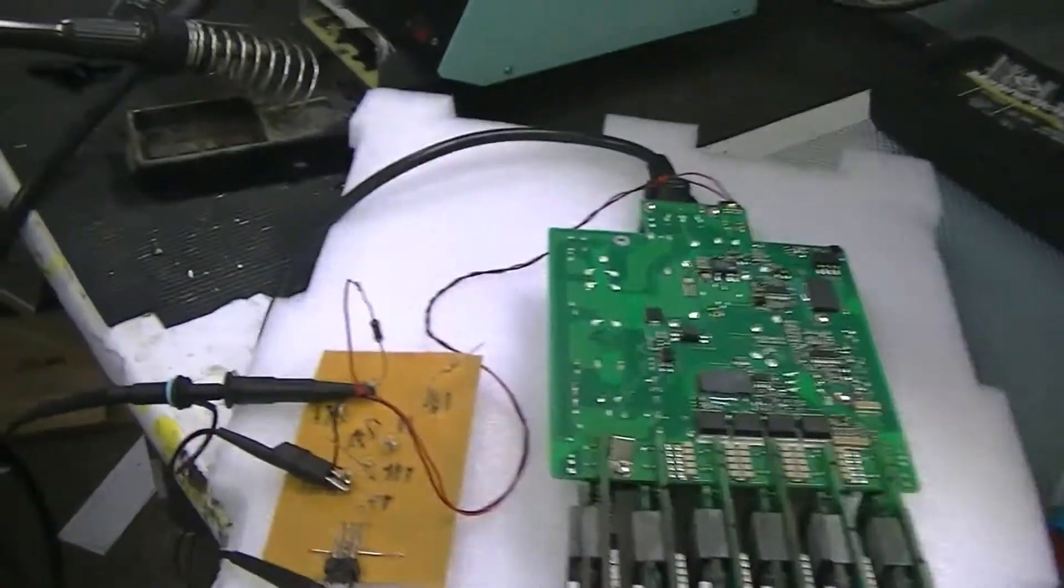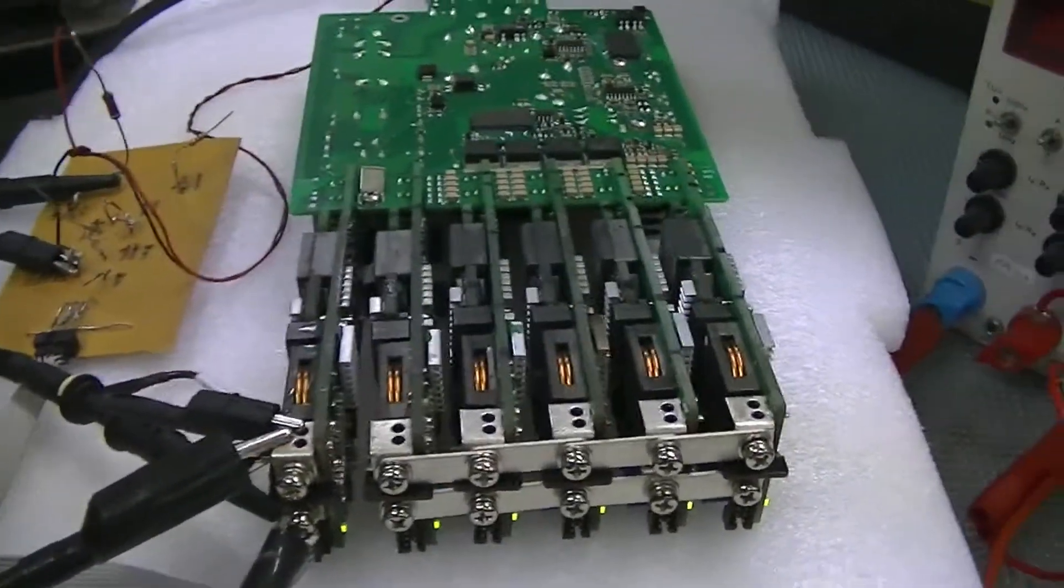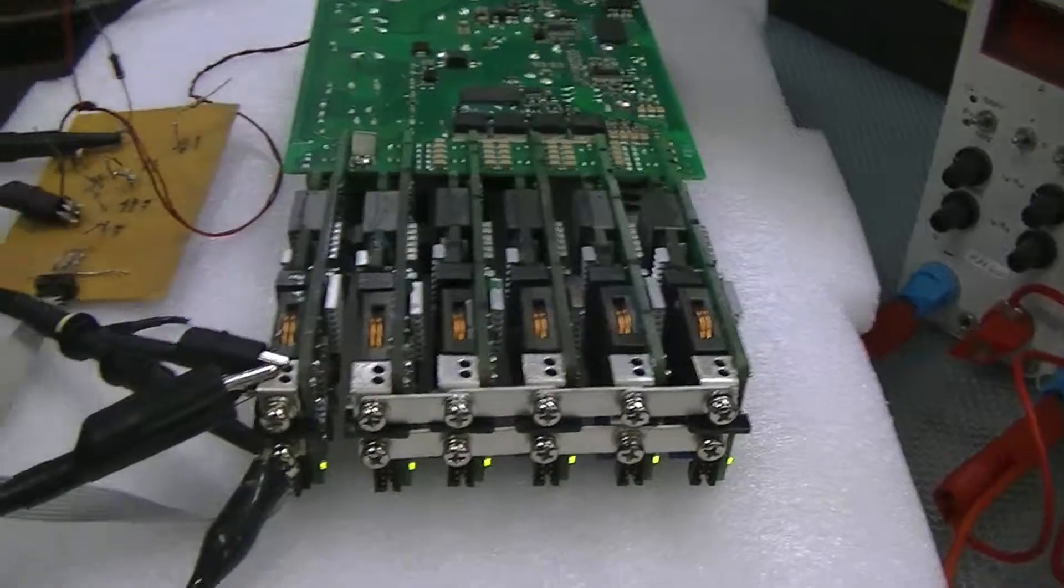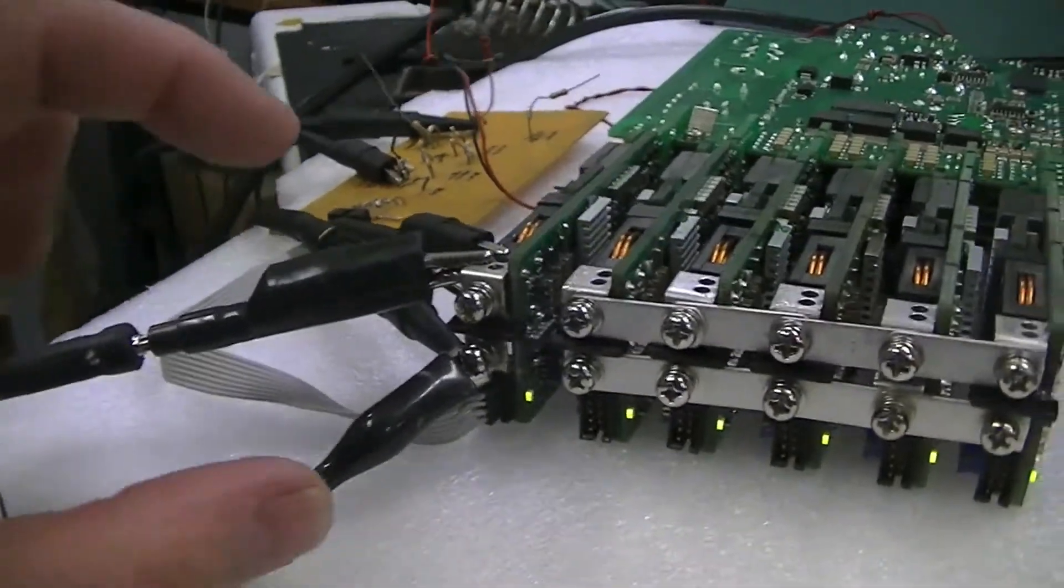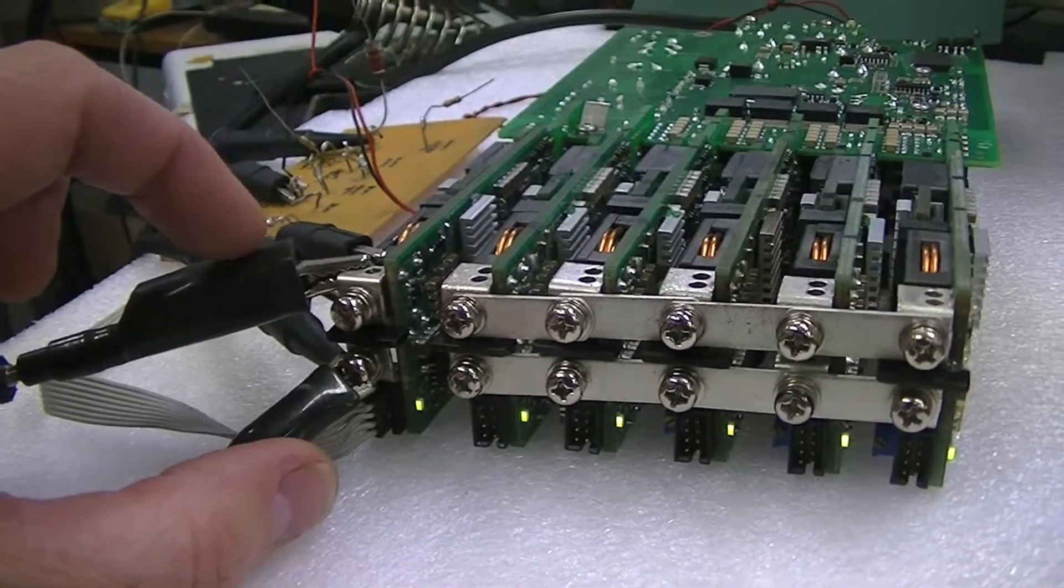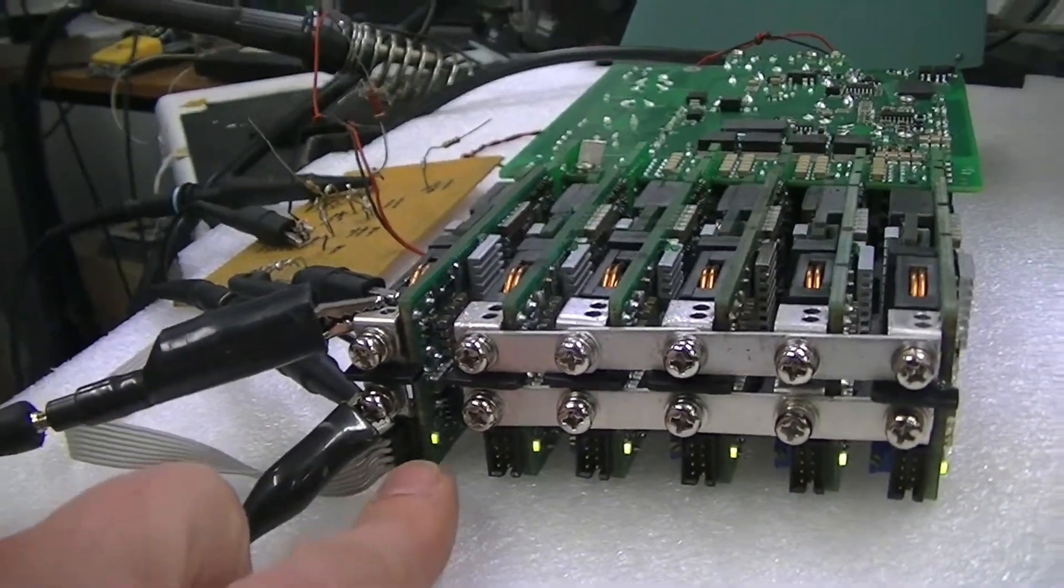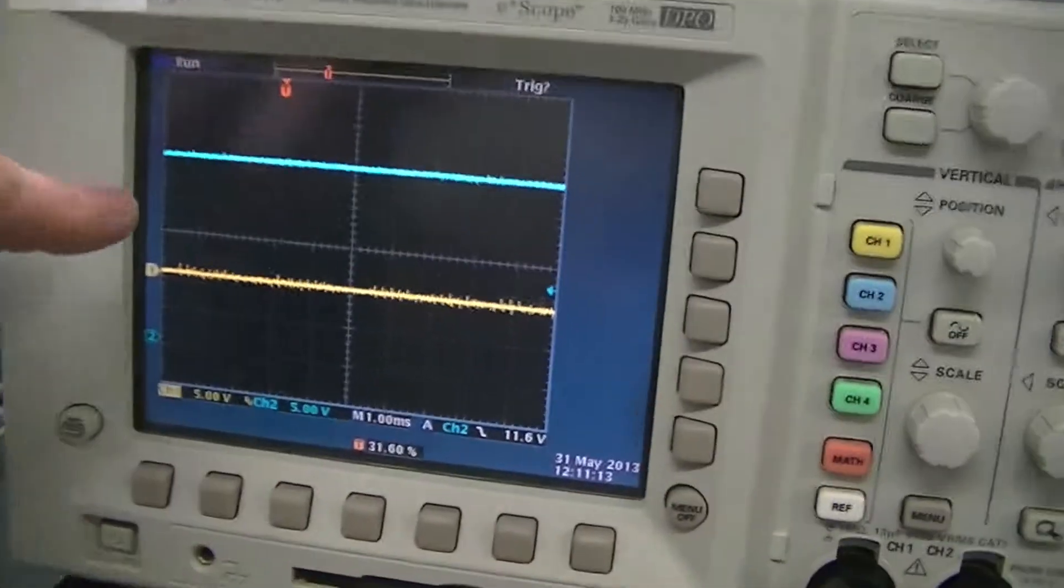We are monitoring both the power good and the output voltage. What we have here is a switch directly across the output of the unit which we can short and open. We will be looking at the LED indicator and on the scope at the power good.